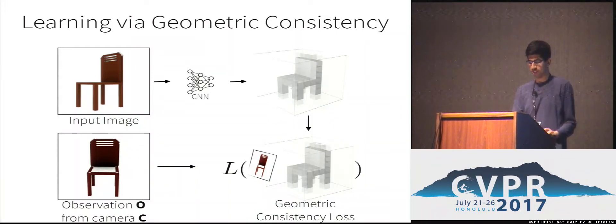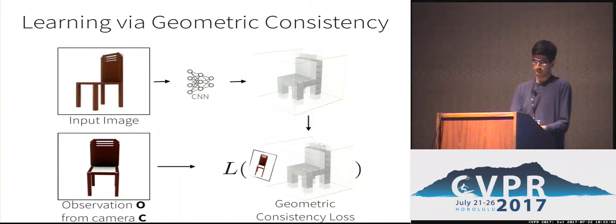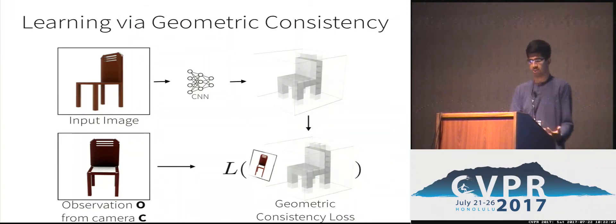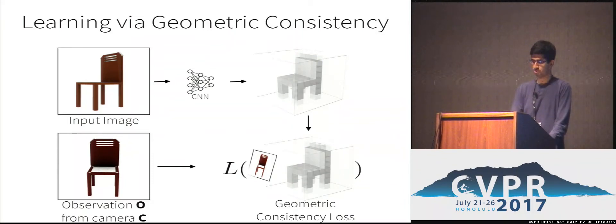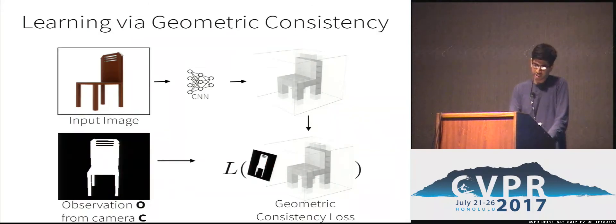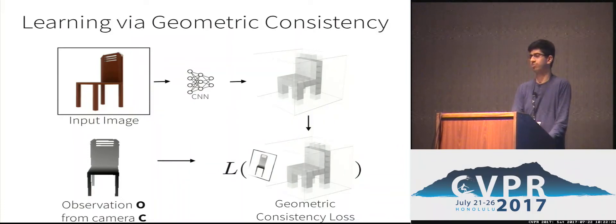I'd like to re-emphasize what's happening here. We don't tell the CNN exactly what output it should give, because we don't have that supervision. Instead, we tell it that whatever output it's predicting should be geometrically consistent with another observation we have. In this way, this geometric consistency loss can allow us to learn from the multi-view supervision and still get a single-image 3D prediction network. The figure shown here illustrates a color image as supervisory signal, but it can instead be a foreground mask image or a depth image. The geometric consistency loss we'll formulate can handle these different kinds of 2D observations.